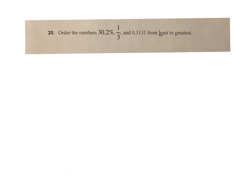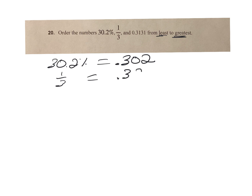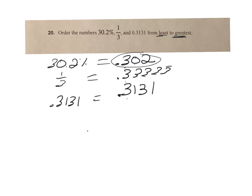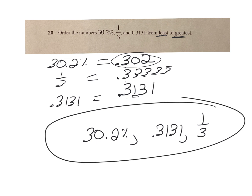Number 20: we have to order these from least to greatest. I'm going to make them all into a decimal. 30.2% equals 0.302. 1/3 into a decimal is 0.33333 repeating. And I have 0.3131, which is already a decimal. They all have a 3 in the tenths place. 0.302 has a 0 in the hundredths — that's the least. So the order is: 30.2%, then 0.3131, and the greatest is 1/3.